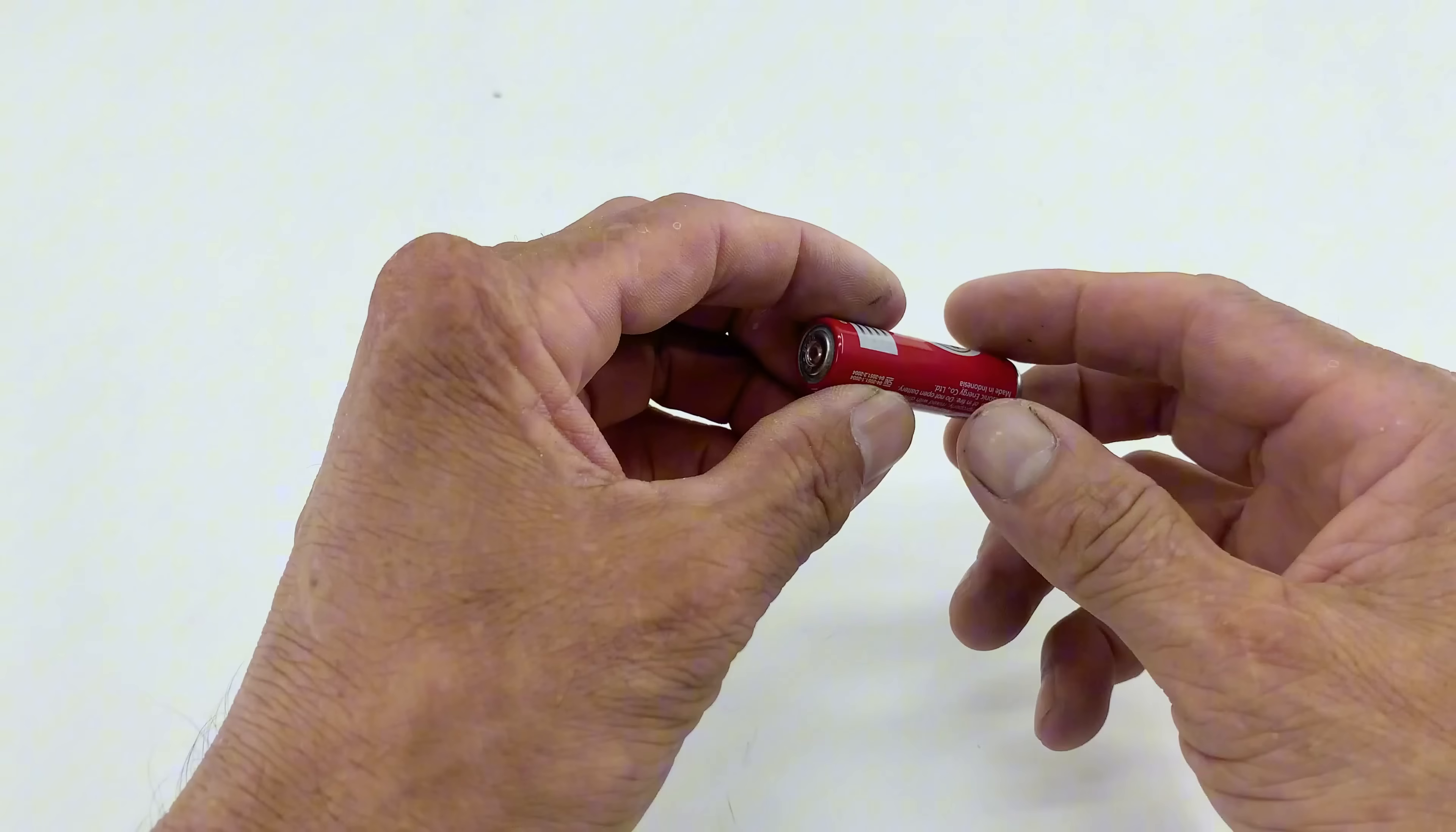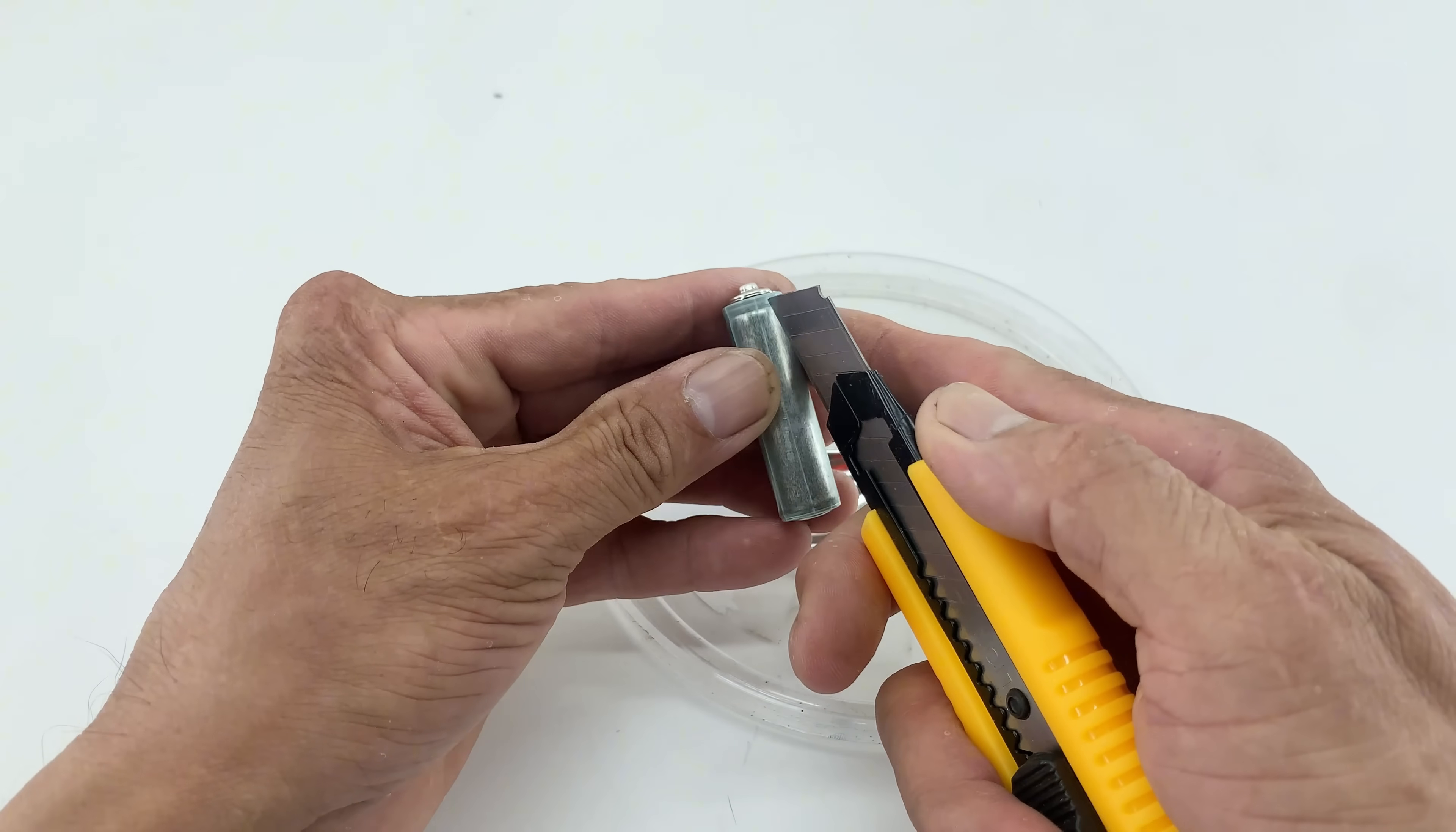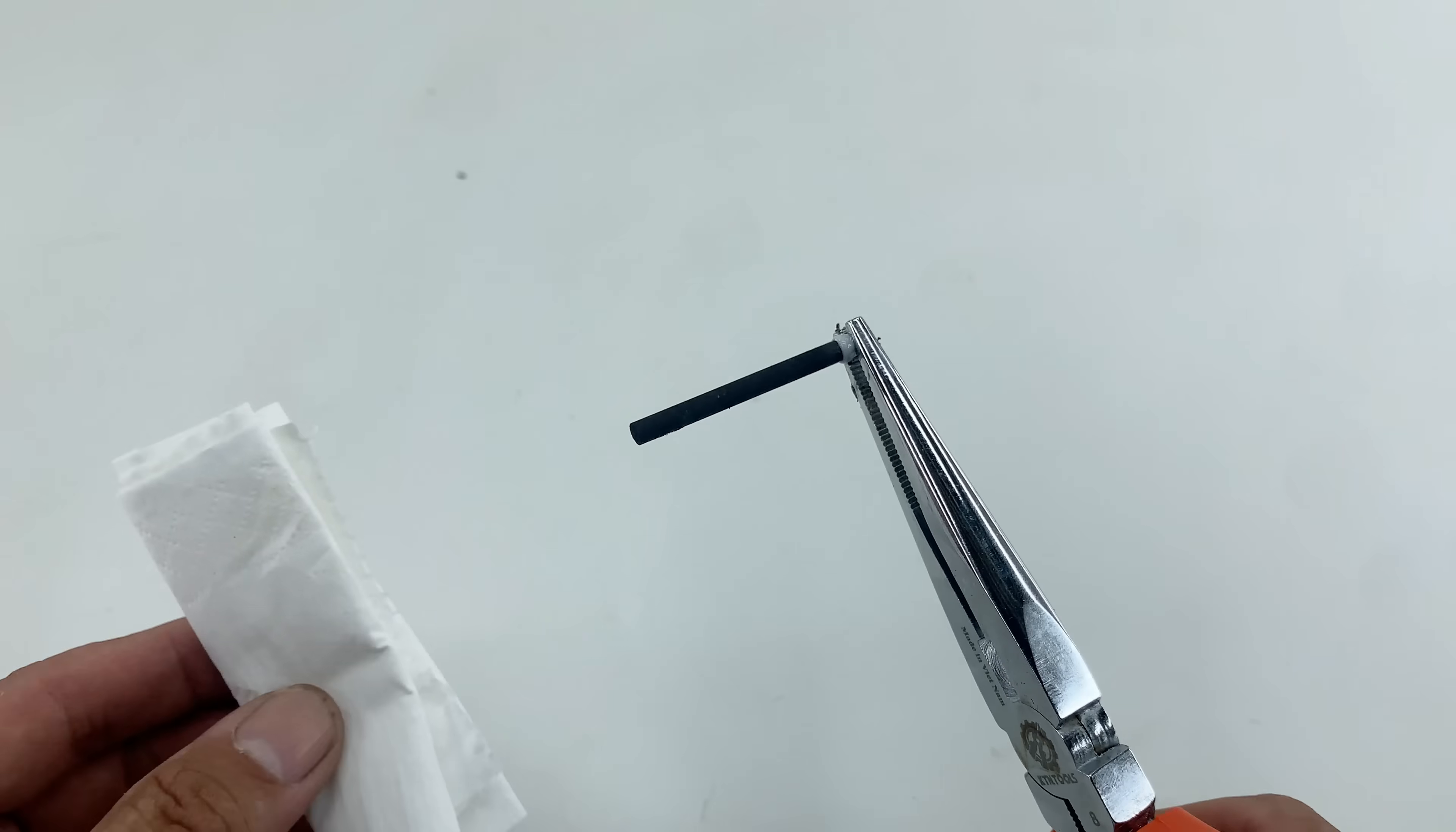For our heating element, I'm repurposing a small battery. I'm disassembling it to extract the carbon rod from inside. I'm carefully cutting away its outer metal casing with pliers. After completely removing the shell, I use a box cutter to cleanly remove the plastic layer on the battery. Then, I remove the metal positive terminal cap from the top of the battery. Then, pliers to gently pull out the carbon rod. This carbon rod is crucial because it has excellent electrical conductivity and can generate significant heat.